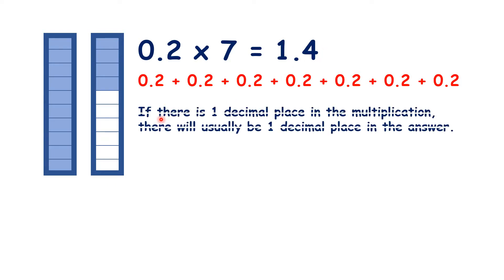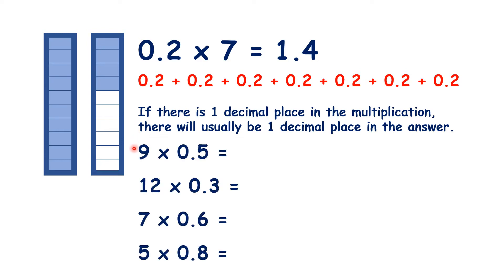So if there is one decimal place in the multiplication — so if there is one number after the decimal point — there will usually be one decimal place in the answer. So pause the video and see if you can answer these questions.